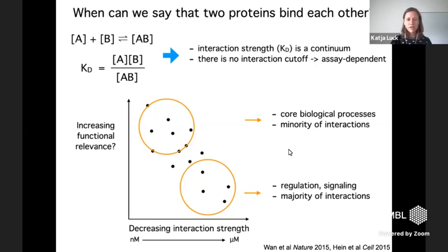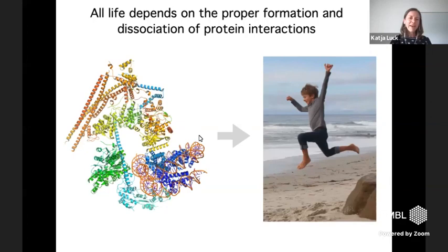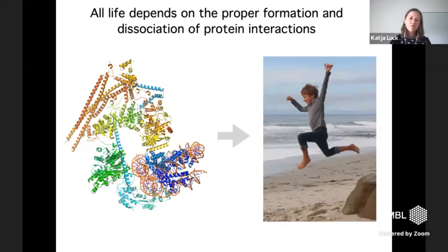There is a correlation that's been found where functional relevance correlates with the conservation of the interaction. All life really depends on the proper formation and dissociation of these very dynamic protein complexes and interactions. And so it logically follows that we should be able to learn a lot about biological mechanisms if we use protein interaction data in our research.